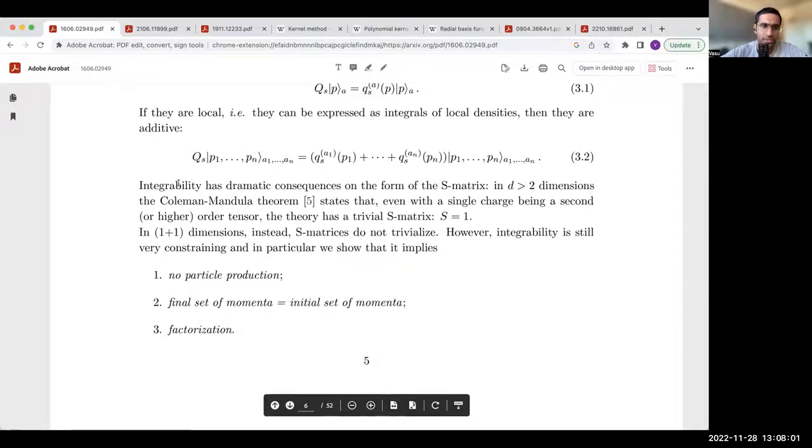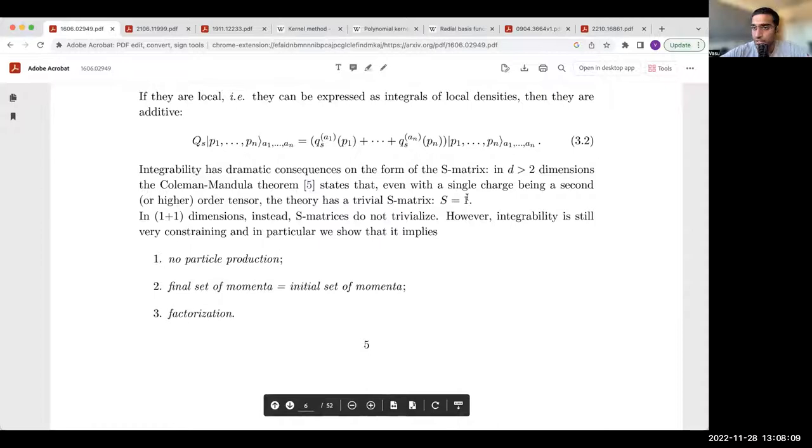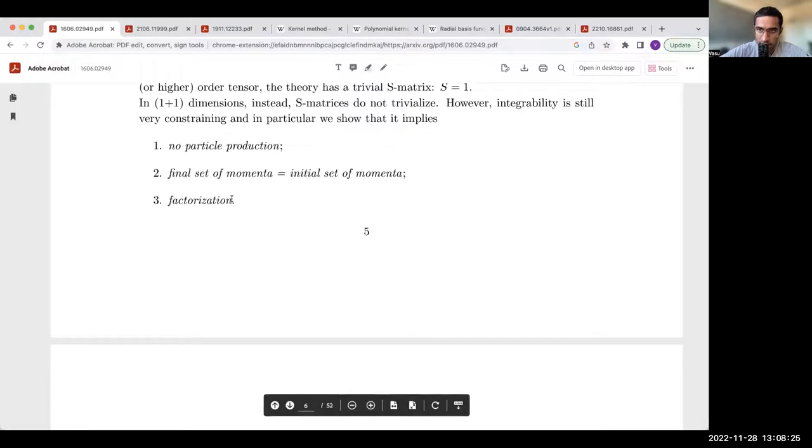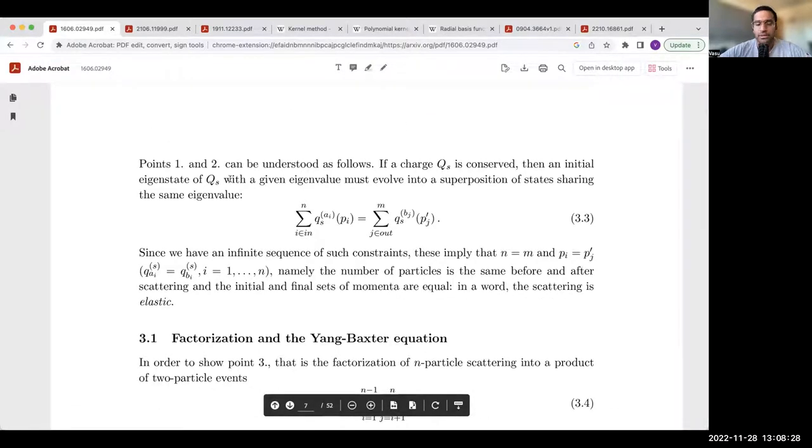This property obviously has dramatic consequences. In fact, in greater than two dimensions, due to the Coleman-Mandula theorem, we must have that the S matrix is just one. In two dimensions, however, what we get instead are the following properties: there's no particle production, the final set of momenta equals the initial set of momenta, and the S matrix factorizes.